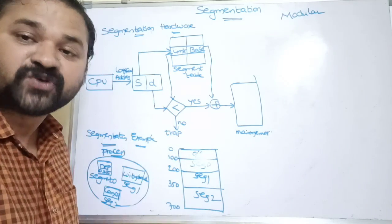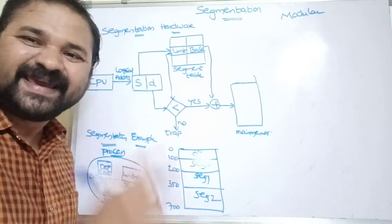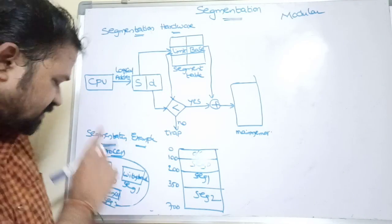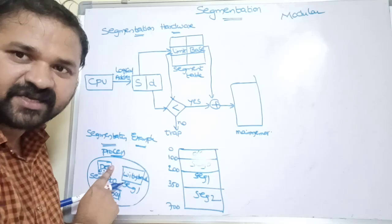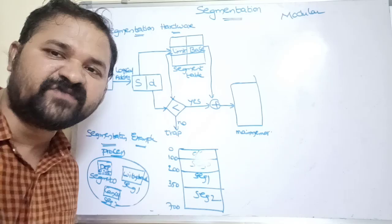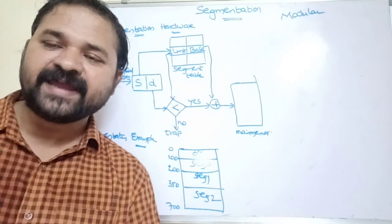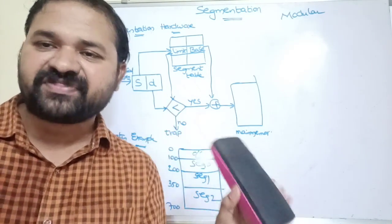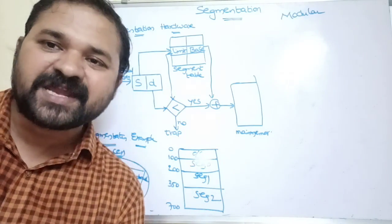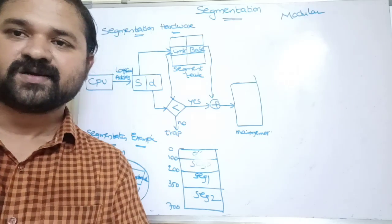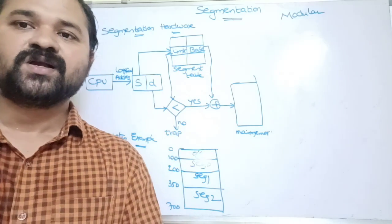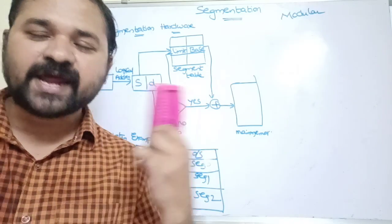In paging, we are not maintaining any modular structure. Modular structure means each partition should contain only one function. This function should not occupy more than one page. The major problem with paging is that it doesn't maintain modular structure — the same method may reside in multiple pages of the process and multiple frames of main memory.